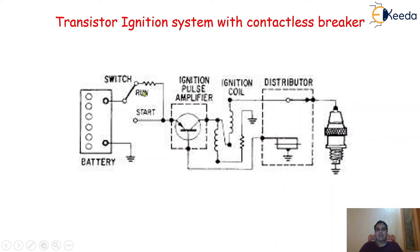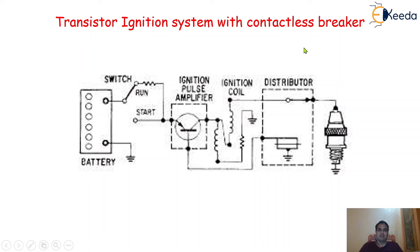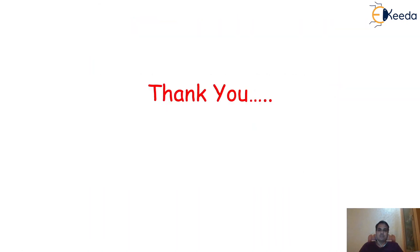When there is a break in the switch, the supply of current in the circuit stops. At that point, the magnetic field that was developed in the primary winding excites the secondary winding, and that high voltage current is supplied to the distributor, then to the spark plug, which provides the spark inside the engine cylinder. This is the working principle of the contactless breaker system.